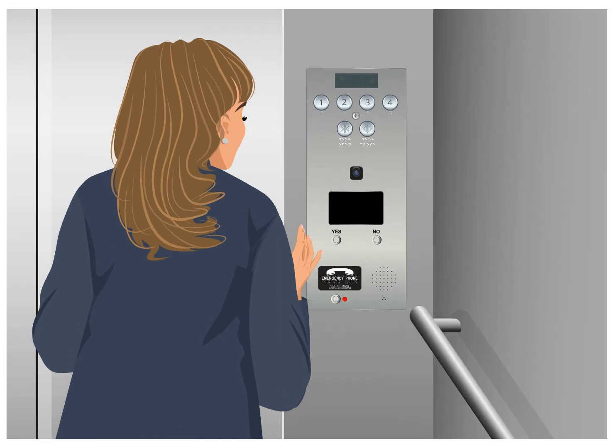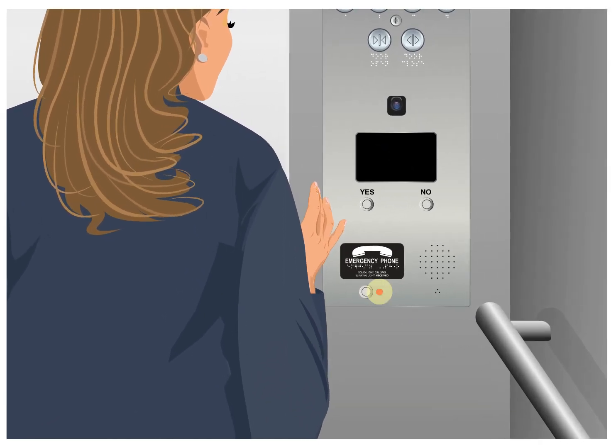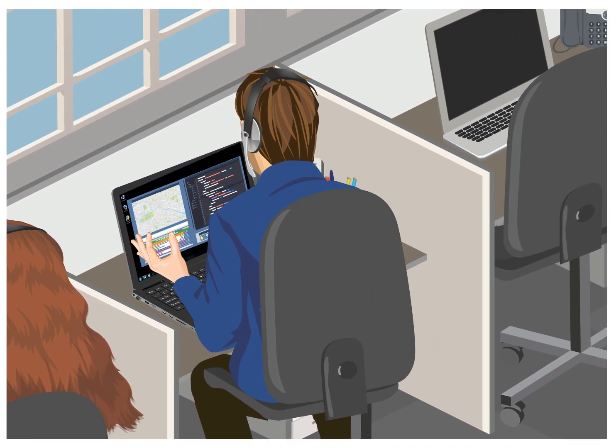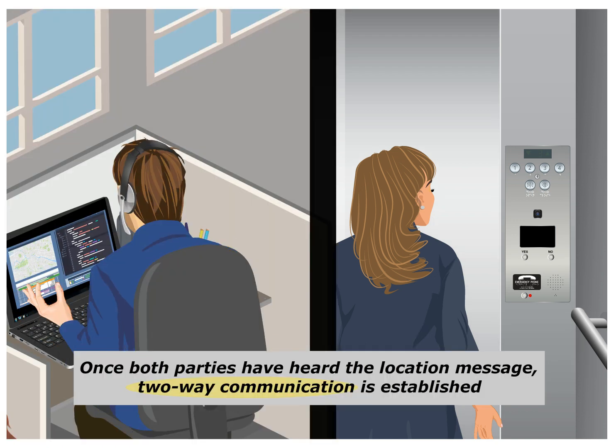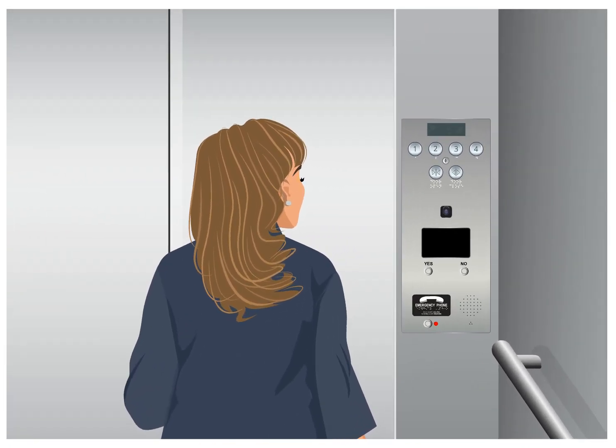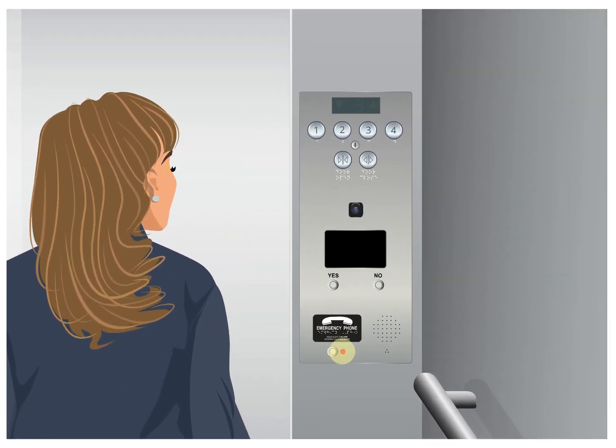The call progress LED will illuminate. The monitoring company answers the call: "What's your emergency?" The pre-recorded location message, which includes a unique ID number, plays twice for both parties: "Highland Hotel, Building B, Elevator 4, SmartView ID 23456." Once both parties have heard the location message, two-way communication is established and the call progress LED will flash.